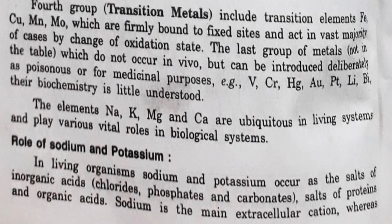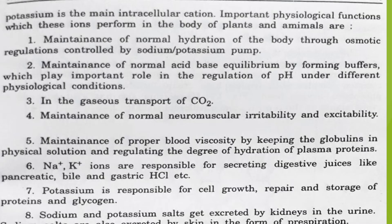Sodium and potassium occur in plants as well as animal cells as salts — chlorides, phosphates, carbonates — and salts of proteins and organic acids. Sodium is the main extracellular cation.